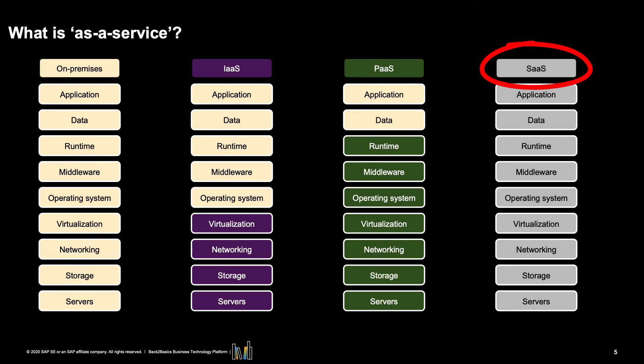Software as a Service, or SaaS, is a software licensing and delivery model in which software is licensed on a subscription basis and is centrally hosted. SaaS applications are also known as web-based software, on-demand software, or hosted software, and are typically accessed by users using a thin client — meaning a web browser. SaaS has become a common delivery model for many business applications, including ERP (Enterprise Resource Planning), CRM (Customer Relationship Management), HRM (Human Resource Management), and others. SaaS has been incorporated into the strategy of nearly all leading enterprise software companies.